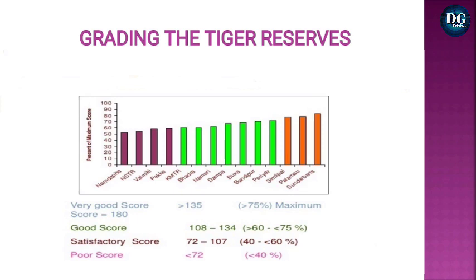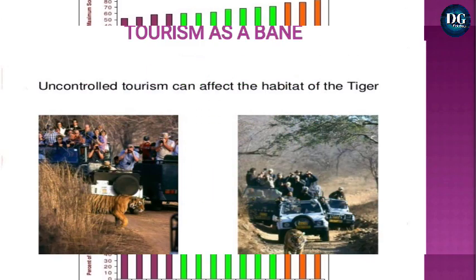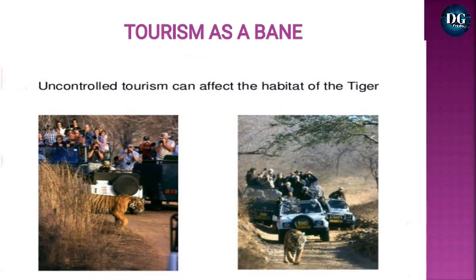On grading tiger reserves: on the x-axis is the percentage of maximum scores, and on the y-axis are the states. A very good score falls between 135 to 180; good scores between 108 and 134; satisfactory between 72 to 107; and a poor score is less than 72. You can easily see the states and how much score they have.